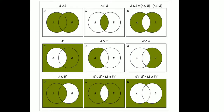This is a Venn diagram representation. A union B is shown, where elements of A and B that are different are shown, and elements common to A and B are marked. In A union B, the elements of A and B including common elements are marked. A union B minus A intersection B is also represented.